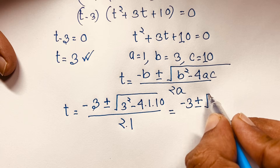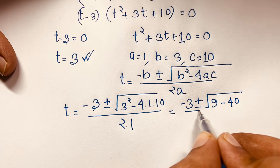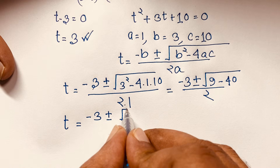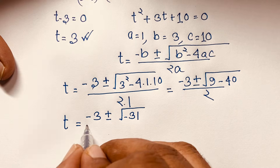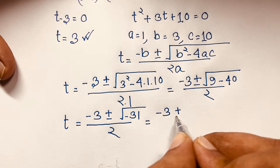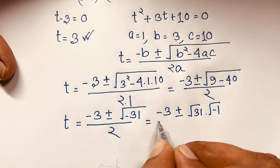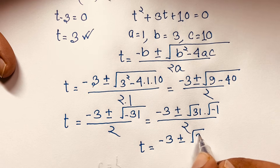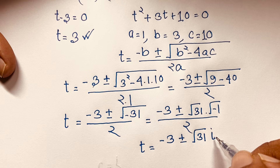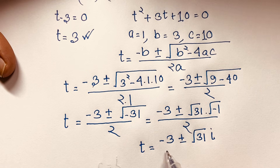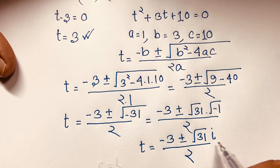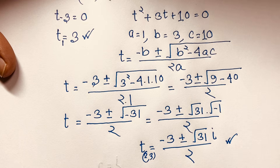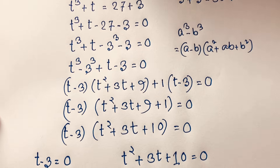This gives t equals minus 3 plus or minus square root of 9 minus 40, over 2, which is minus 3 plus or minus square root of negative 31, over 2. This becomes minus 3 plus or minus square root of 31 times square root of negative 1, over 2. Since i equals square root of negative 1, these are complex numbers. So altogether we find 3 roots: t₁ equals 3 (real), and two complex roots.